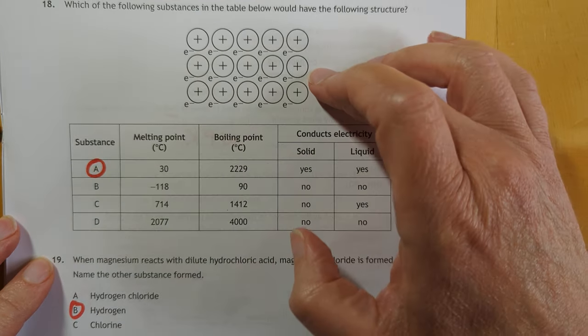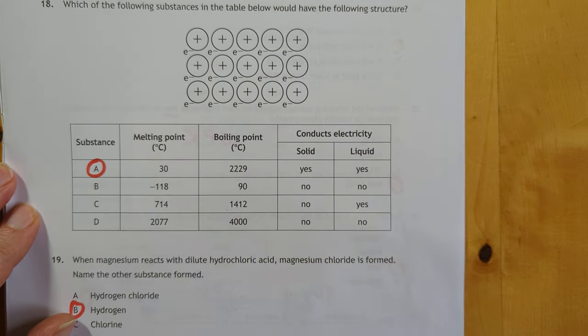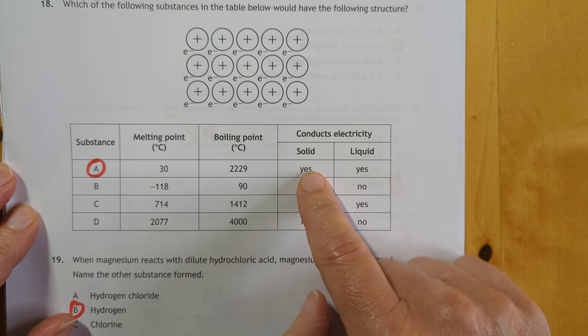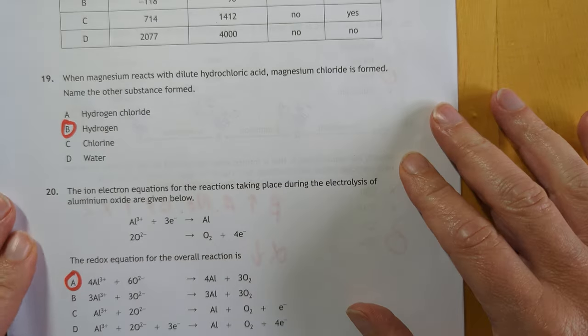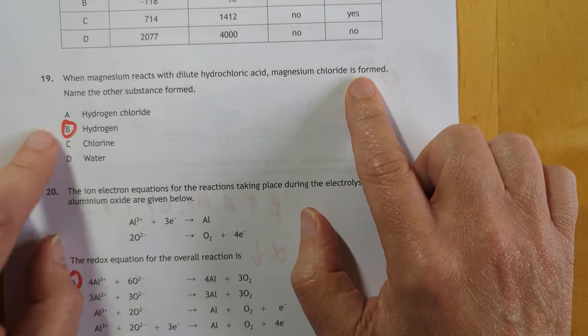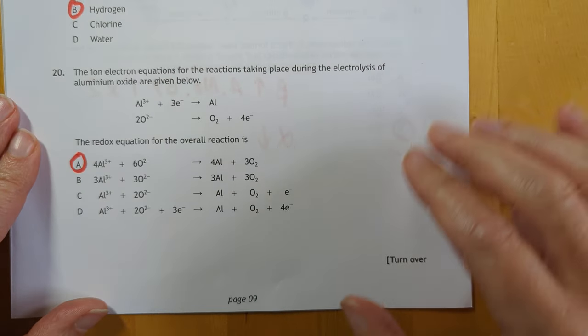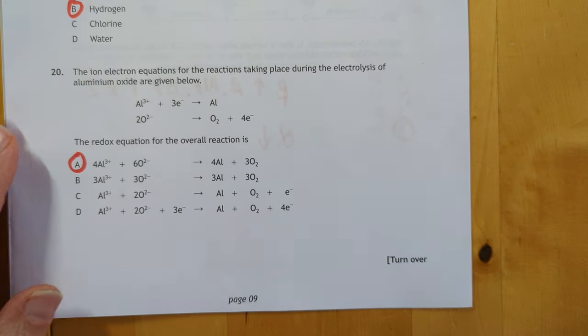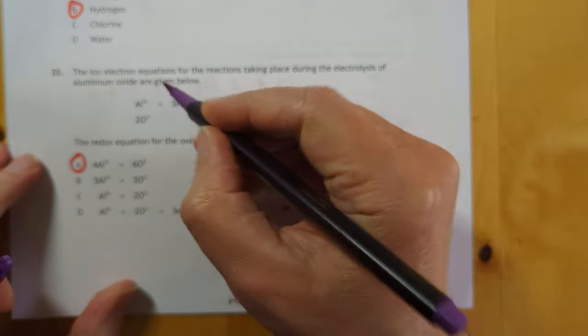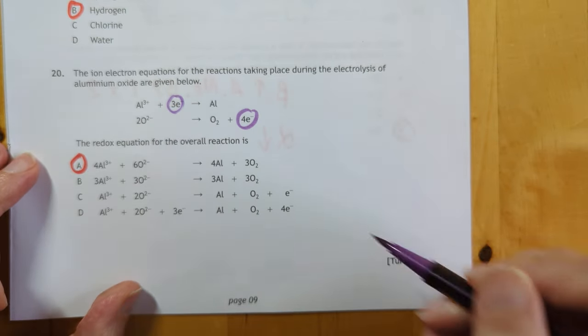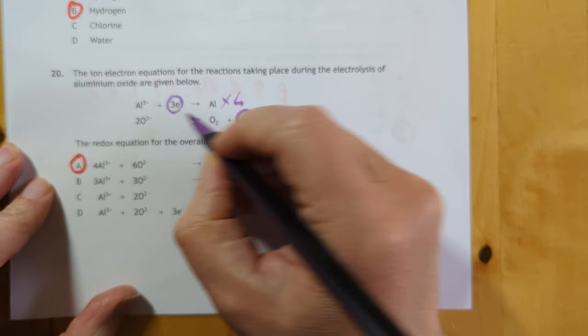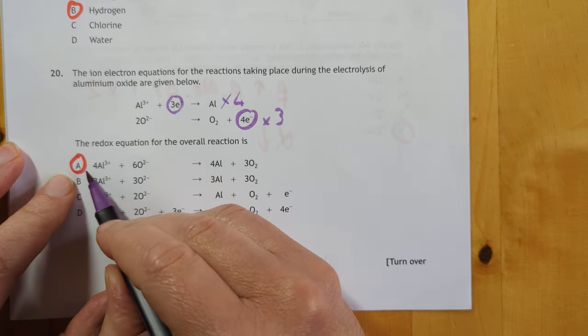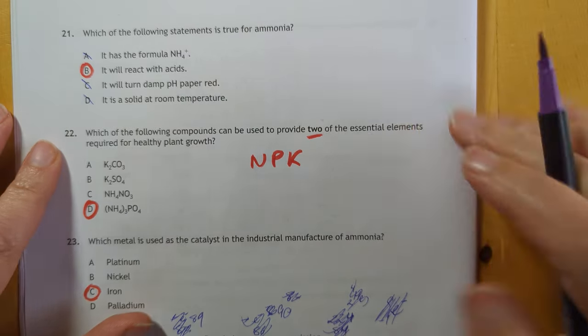Number 18. That structure there is a metal because it's delocalised electrons. You're looking for metallic bonding properties straight away. I'm hoping you realise that's the only ones that conduct when they're solid. So that must be your metal. 19. Midian chloride is formed and you're also going to get hydrogen gas. 20. This is a tricky one because you've got to combine an oxidation and a reduction to get the overall reaction and to do that we need to get the same number of electrons being lost and gained. So the top one here you're going to have to multiply by 4 to give 12 electrons and the bottom one you multiply by 3 and that matches up to this one here.